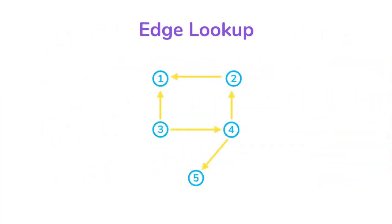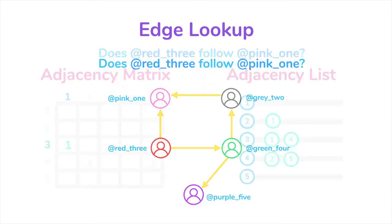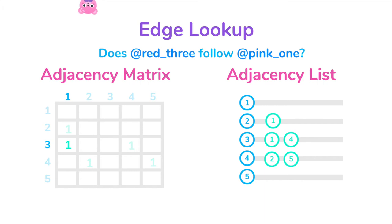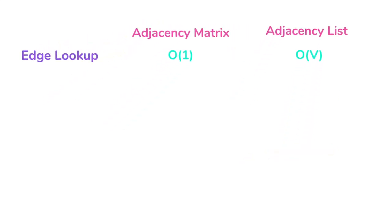What about looking up an edge, like checking whether two vertices are connected or not, or checking who follows who? In that case, the adjacency matrix is much faster because we just need to do an array lookup which would just take constant time. But if you try to do that in an adjacency list, we need to traverse the list of adjacent vertices, which in the worst case we would need V steps if the number of vertices is V.